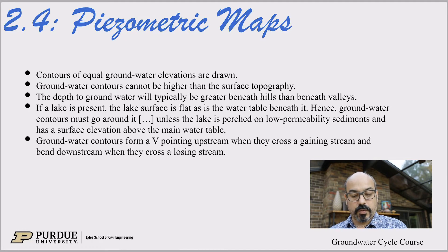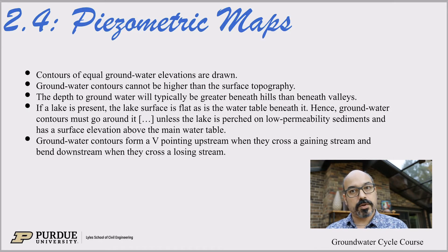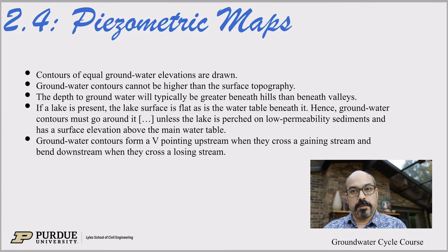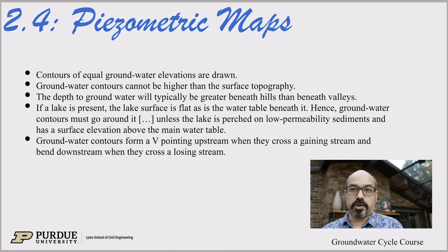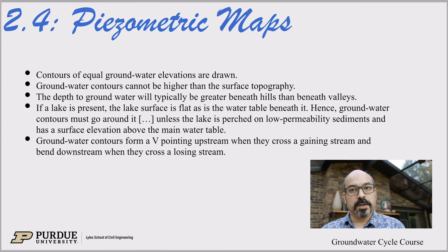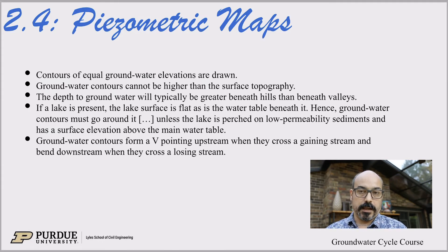Groundwater contours form a V pointing upstream when they cross a gaining stream, and bend downstream when they cross a losing stream. Most streams are gaining — they gain water from the groundwater and flow it out of the landscape. But sometimes streams actually discharge water to the groundwater, like the Okavango example, where streams infiltrate into the ground and recharge the groundwater.